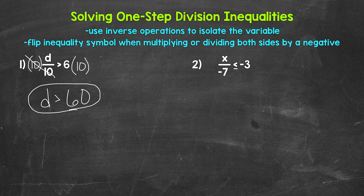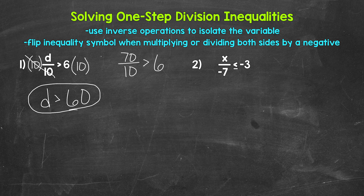Let's check a solution to make sure we are correct. We can't check every value greater than 60 — that would be impossible. We have an infinite amount of possibilities as far as solutions, values that make this inequality true. So we can check one value. Let's use 70. 70 is greater than 60 and works with that 10. So let's plug in 70 for d. We have 70 divided by 10 is greater than 6. 70 divided by 10 gives us 7, and 7 is greater than 6. So this does work. We are correct: d is greater than 60.